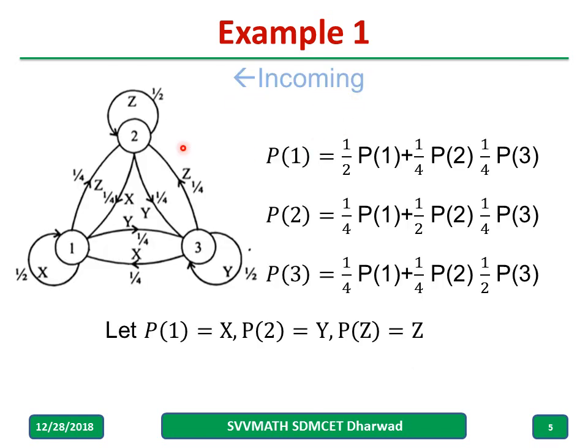Consider the incoming for each state, say probability of 1, state 1. Incoming are 1, another 1, another 1. Their probabilities are 1 by 2, 1 by 4, 1 by 4.